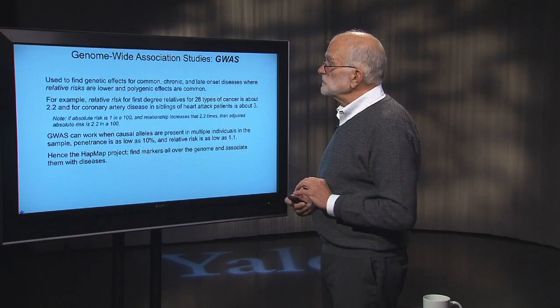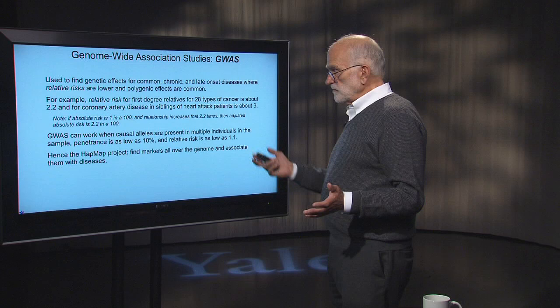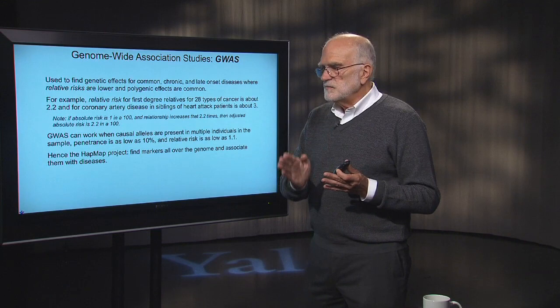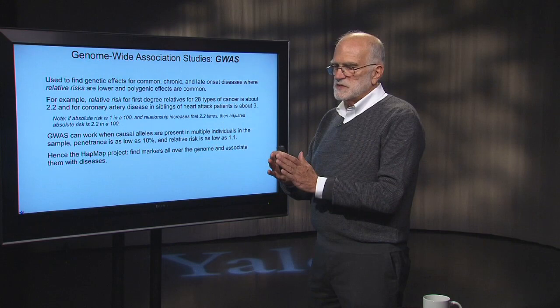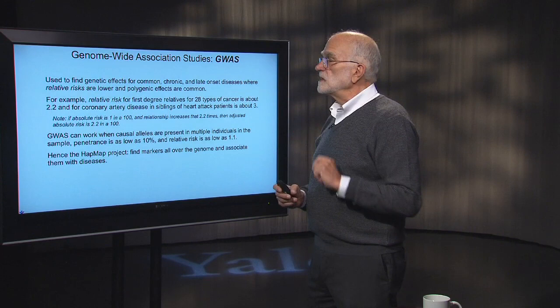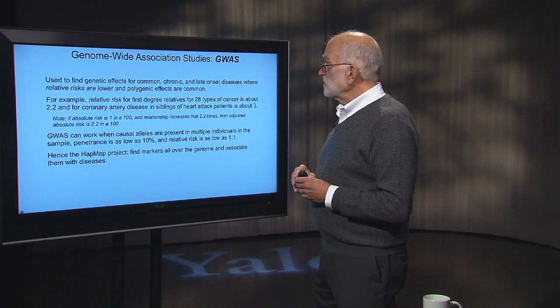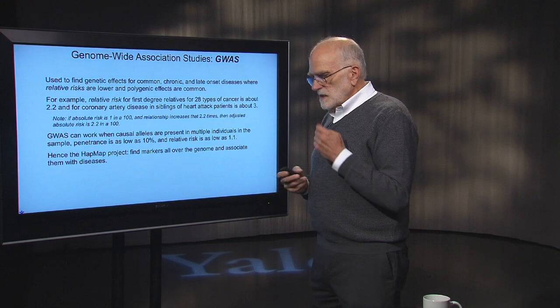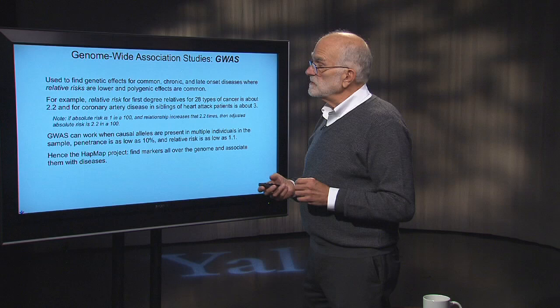In order to look at this in the modern genetic context, we need some background on genome-wide association studies. This is a way of analyzing genetic data where you have signposts across the genome, which might be in regions containing five to 100 genes. You can recognize which variant a patient has depending upon a single nucleotide polymorphism. They are used to find genetic effects for common chronic and late-onset diseases, where the relative risk is a bit lower and polygenic effects are common. These are not classical Mendelian genetic diseases of large effect.